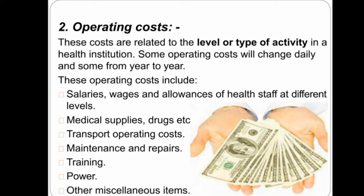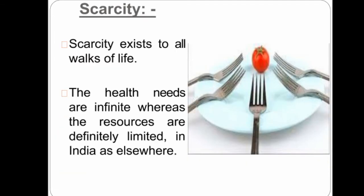Operating cost items include medical supplies, transport, maintenance and repairs, training, power, and miscellaneous items. Scarcity means that health needs and wants are infinite, but resources are limited.